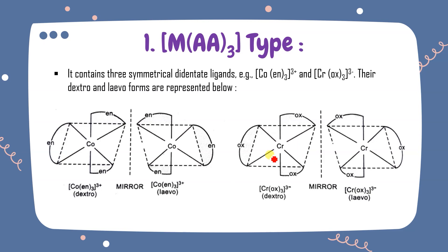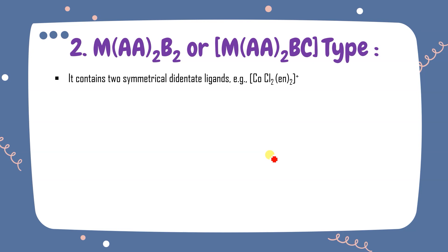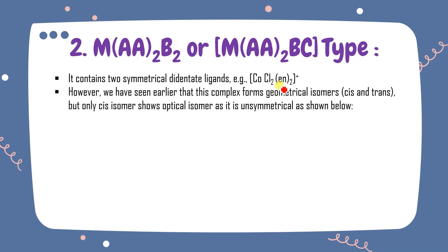In the MAA₂B₂ type — two bidentate and two monodentate ligands — the monodentate ligands may be same or different. For example, Co(Cl)₂(en)₂: we have already drawn the picture for this complex, and it forms geometrical isomers also. Two same groups at adjacent positions makes it cis, and diagonally opposite makes it trans.